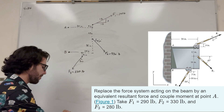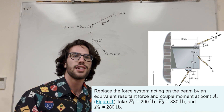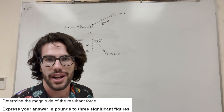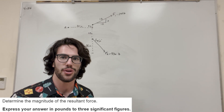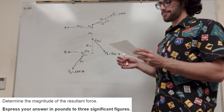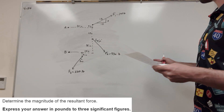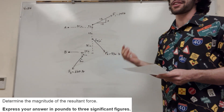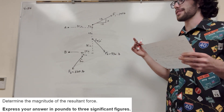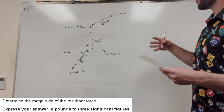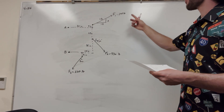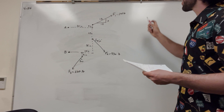So what are we starting to find first? Well, it looks like we're trying to find a resultant force. So let's go ahead and find the magnitude of the resultant force, which is what it's asking for in part A. We're going to have to add all these forces together in the X, add them all in the Y, and then take the magnitude of that.